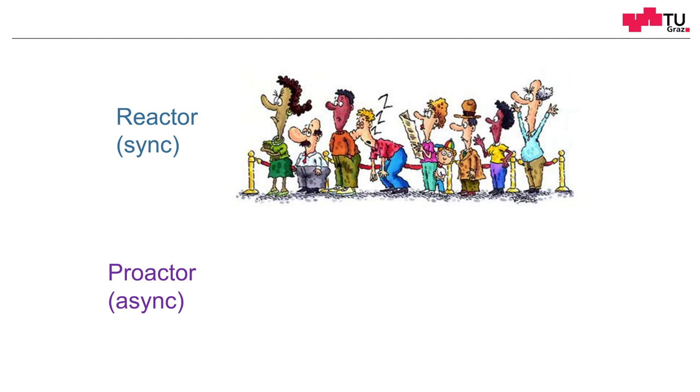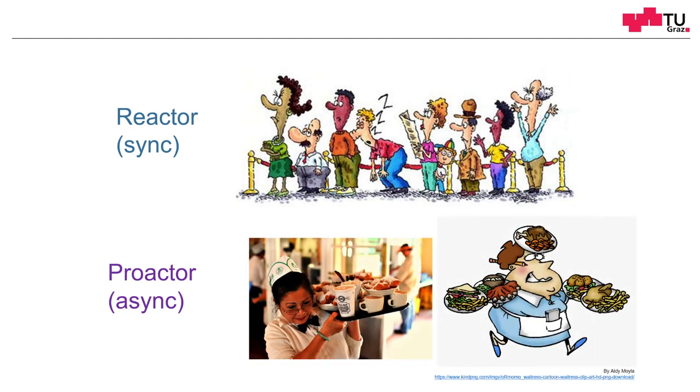And the Proactor is more similar to a waitress in a restaurant, which serves multiple clients at the same time, but maybe could get overwhelmed with all the orders and dishes. And the individual clients maybe have to wait longer until they get their result, because multiple others are also demanding their results. Okay, that's it. Thank you for watching and good day.